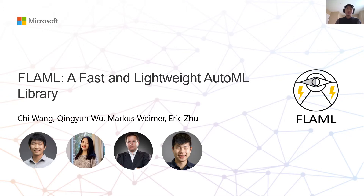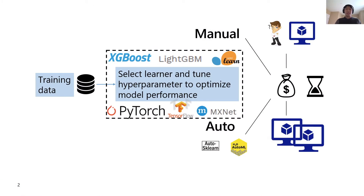More and more teams start building millions of machine learning embedded applications. It adds up to a large cost to manually tune the hyperparameters and choose the right training algorithm for every task and every dataset. AutoML tools automate this process and reduce the human effort, but they often consume large computational resources, especially for large-scale training data.